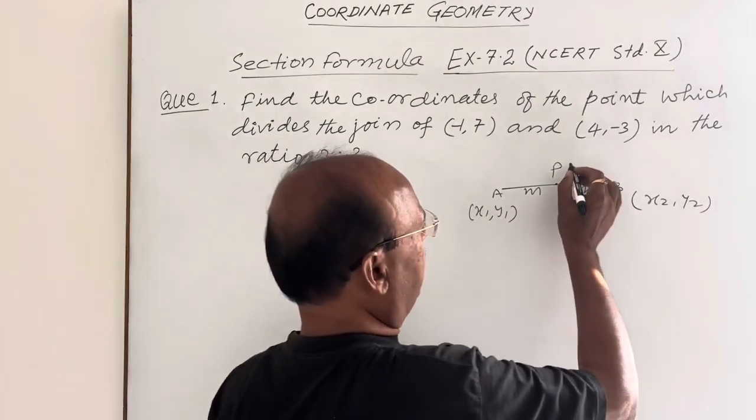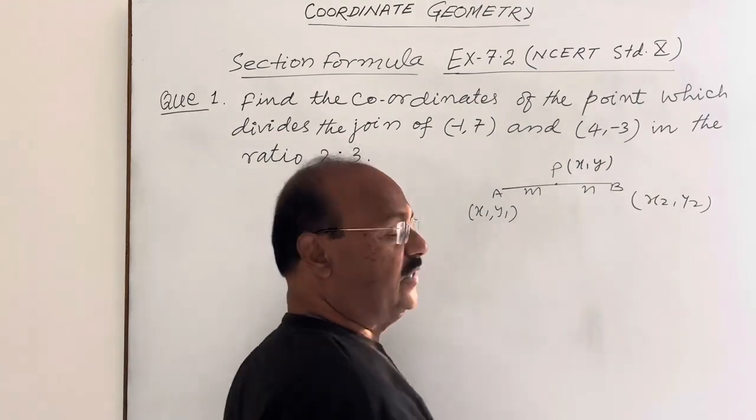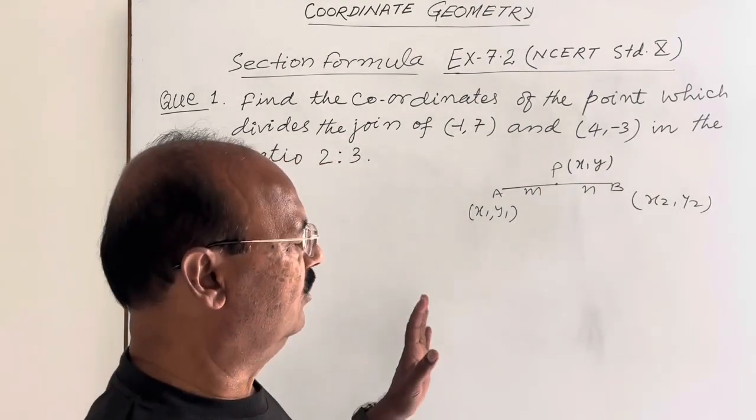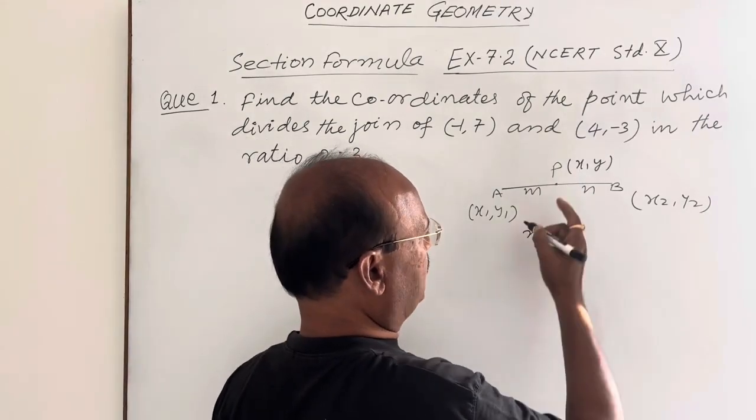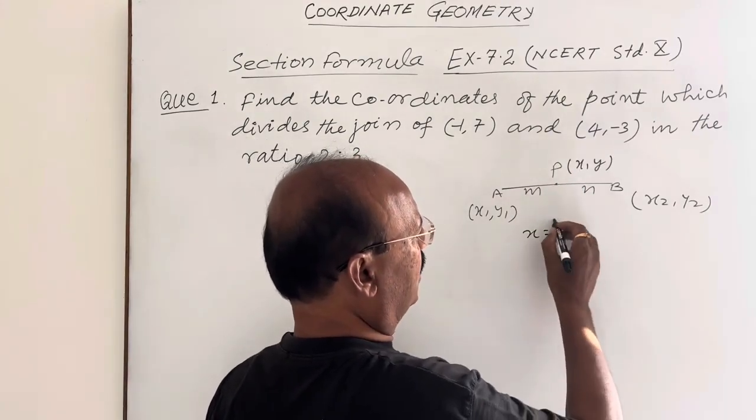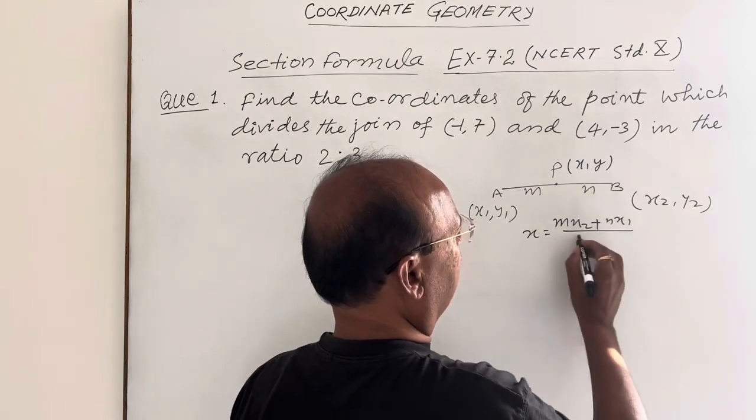Let us suppose point P has arbitrary coordinates (x,y). Then with the help of the section formula, this value of x, means the x-coordinate of point P, is (mx2 + nx1) divided by (m + n).